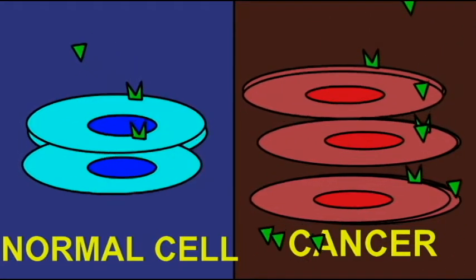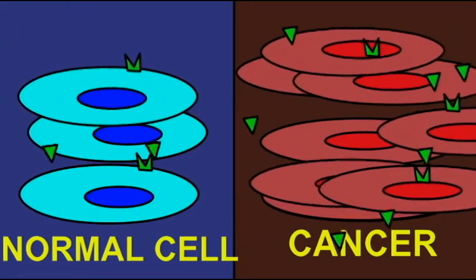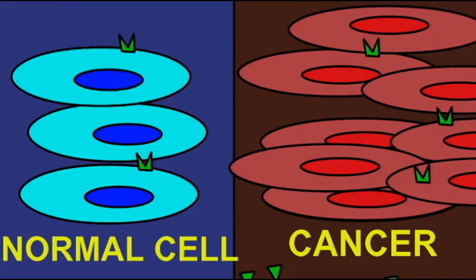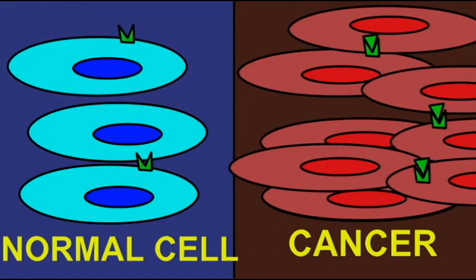If a body simply produces too much growth factor, then this might cause otherwise normal cells to now divide abnormally. Notice this would not be the production of an abnormal protein, just too much of a normal protein. Some people have cancer because of overproducing the growth factors which cause cell division.